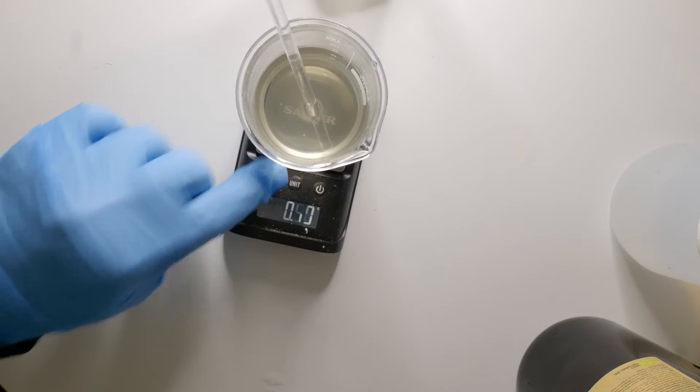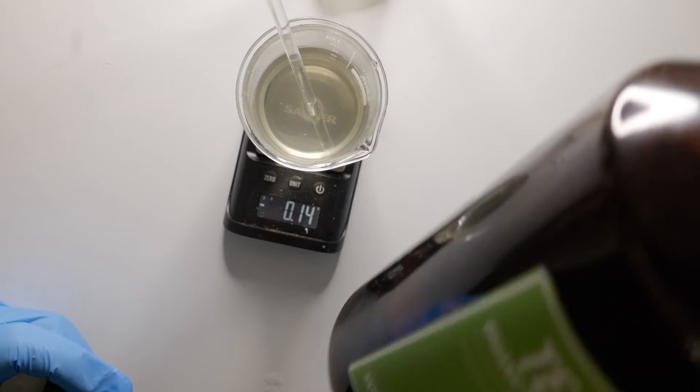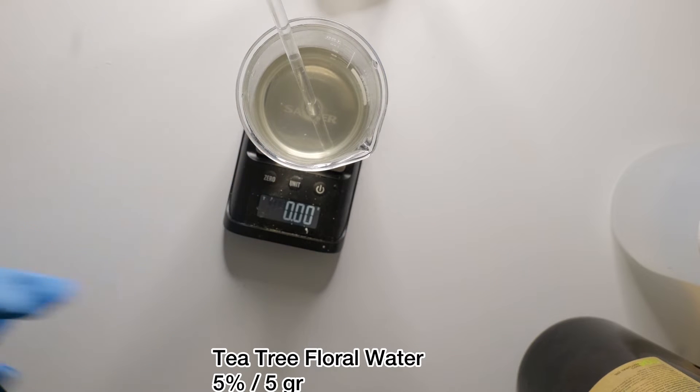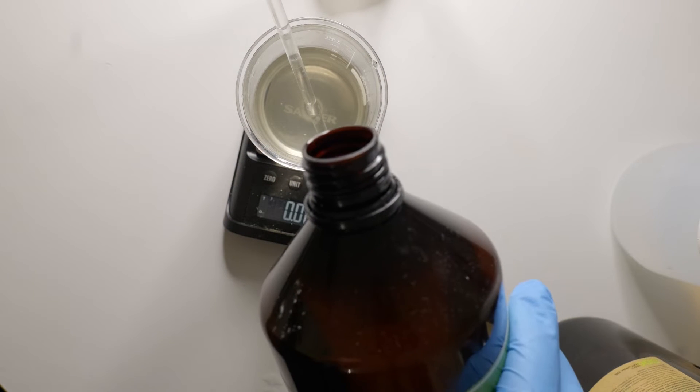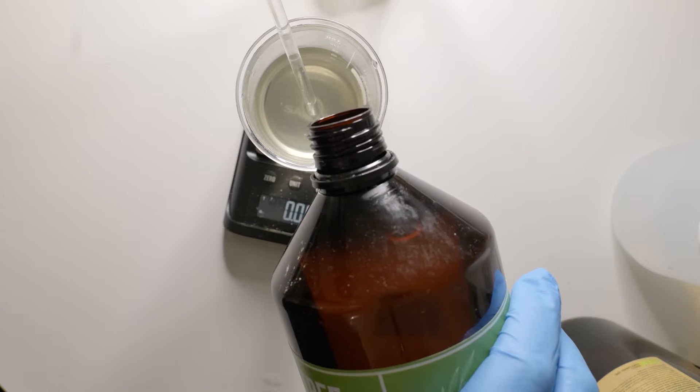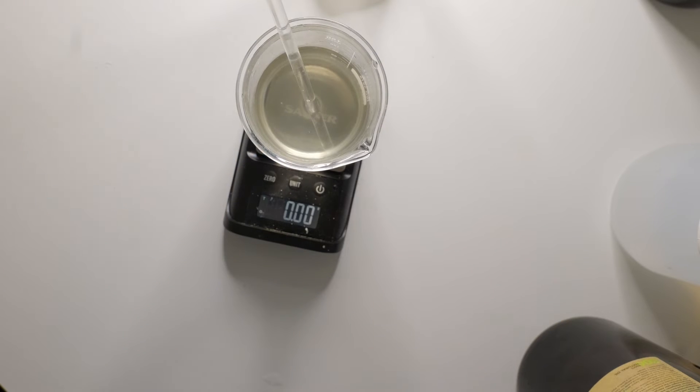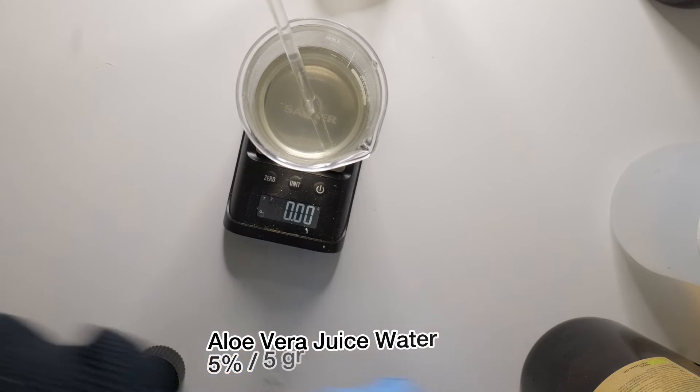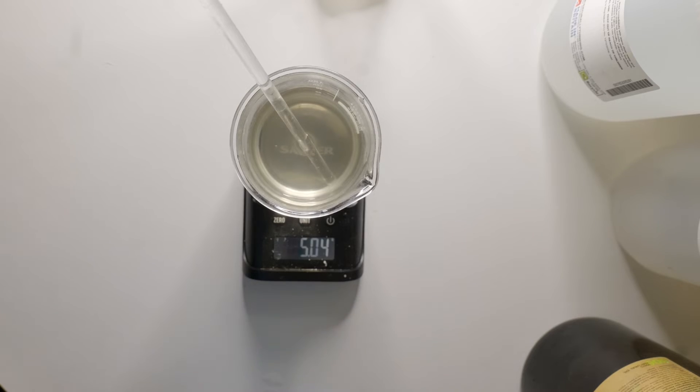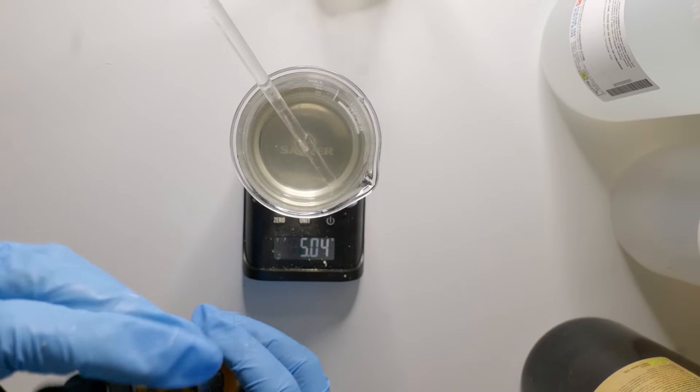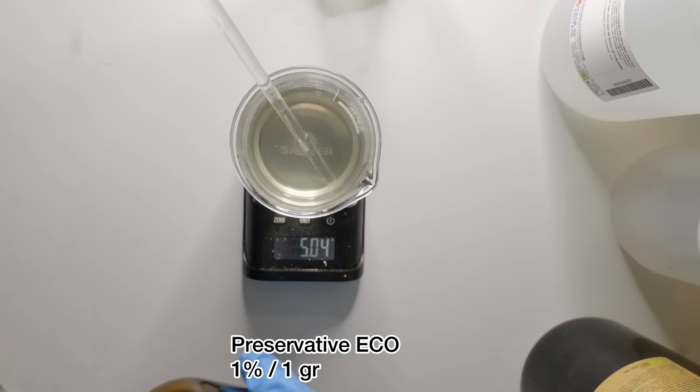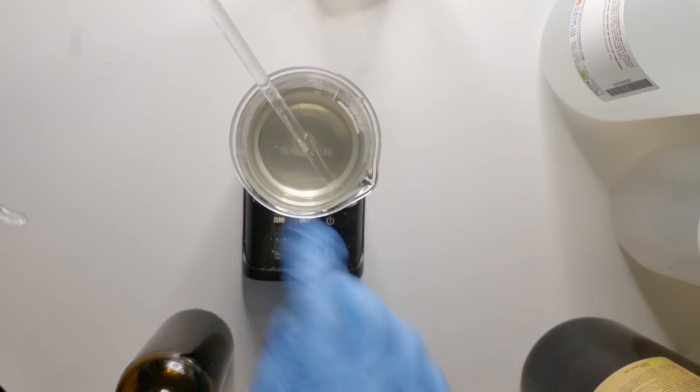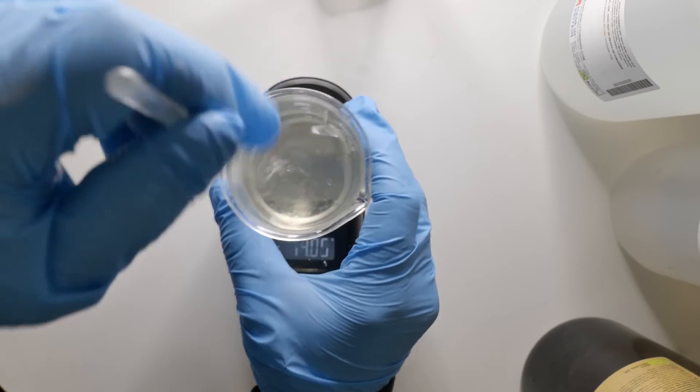Before we combine everything, we just have two more ingredients to add. That's tea tree floral water, which helps with any kind of spots or acne issues as well, and this is good for brightening. So 5 grams of tea tree and another 5 grams of aloe vera juice - this is organic aloe vera juice. We can also add our preservative as well.